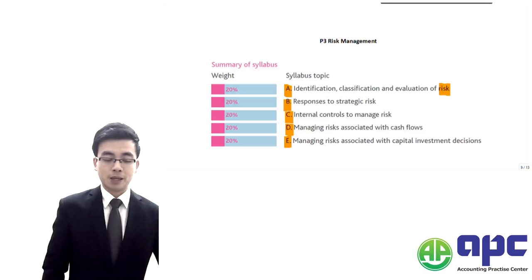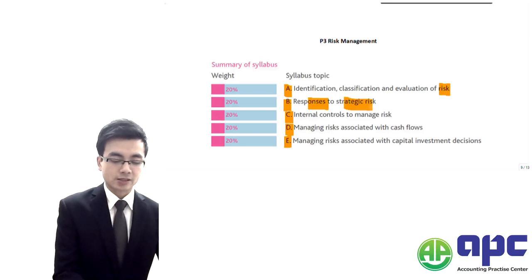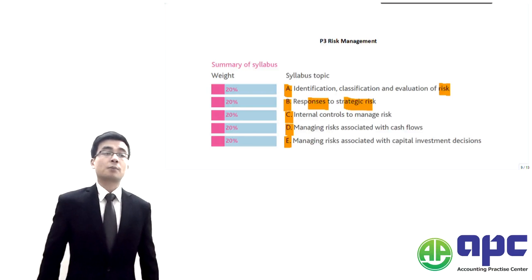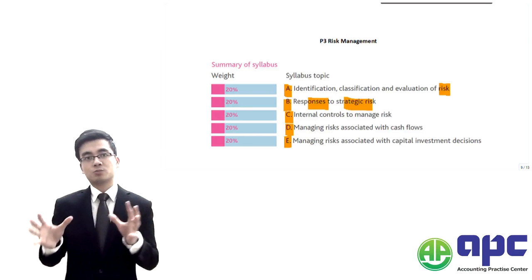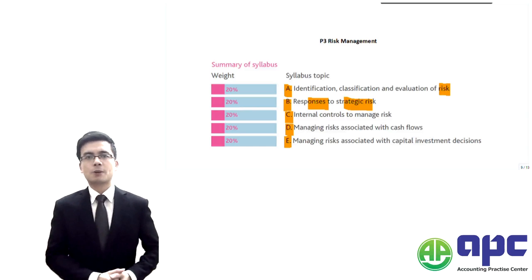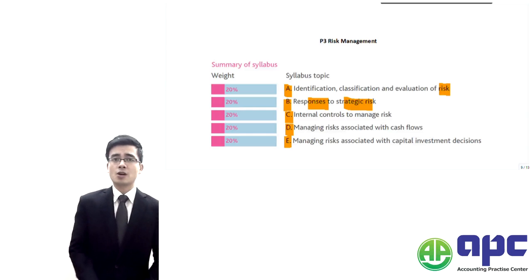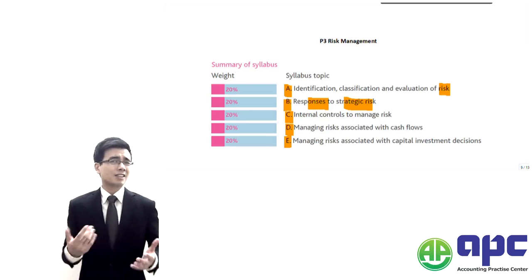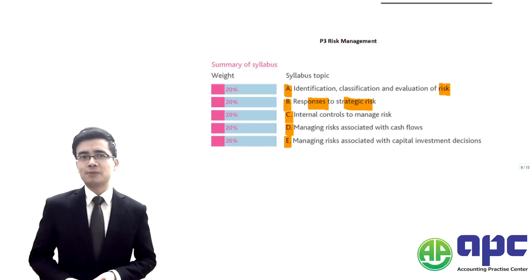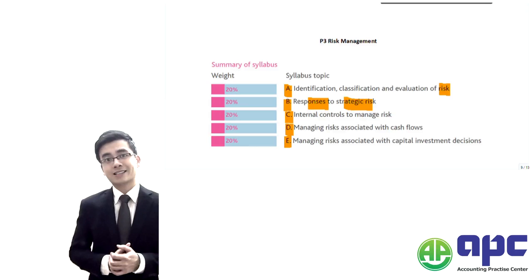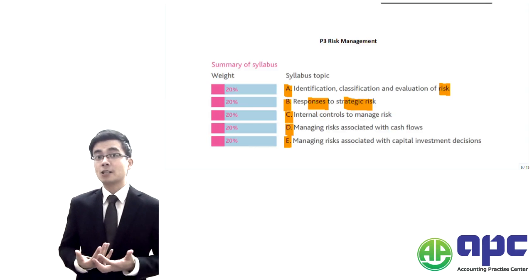In section B, it's talking about the responses to strategic risk. Think about it this way. We've got a multinational company and we like to expand our business. One of the ways we can do this is to invest the money into Vietnam, for example. If that is the case, maybe the government in that particular country would try to nationalize my assets after I made our investments.